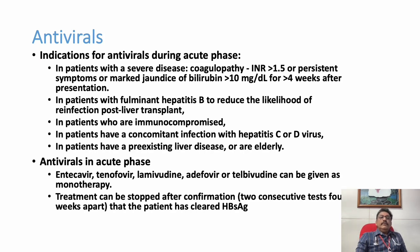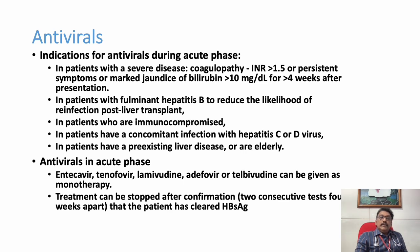Antivirals can be given in the acute phase for patients with severe liver disease, coagulopathy more than 1.5, persistent symptoms, bilirubin more than 10 for 4 weeks, fulminant Hepatitis B, or to reduce likelihood of re-infection post-liver transplant. Immunocompromised patients with diabetes, malignancy, or HIV should also be treated, as should those with associated Hepatitis C, Hepatitis D, or HIV co-infection, and those with pre-existing liver disease.